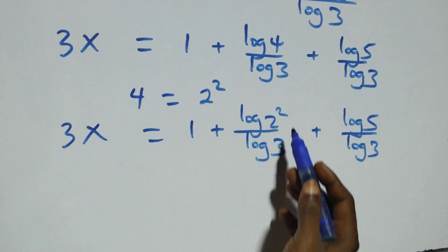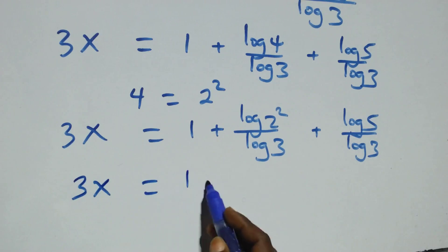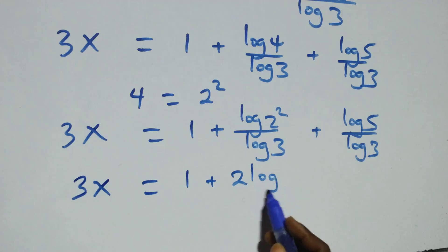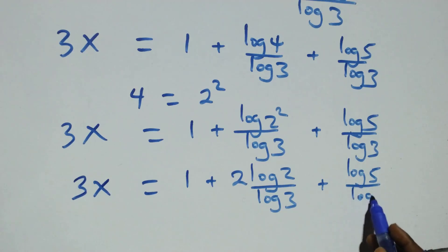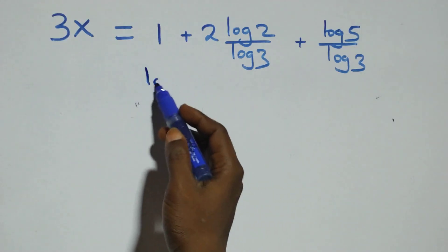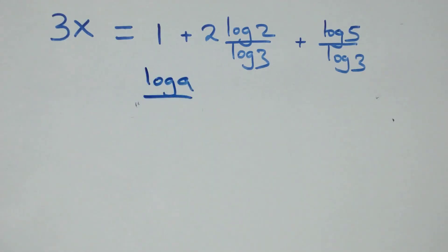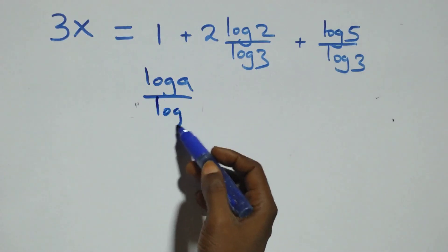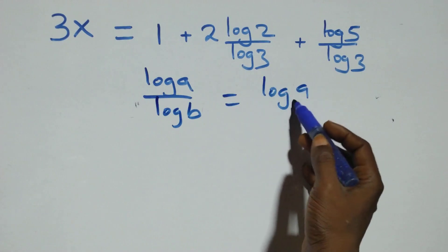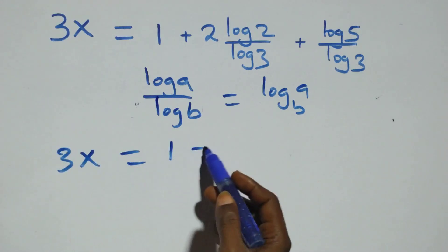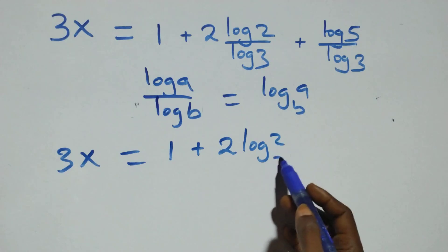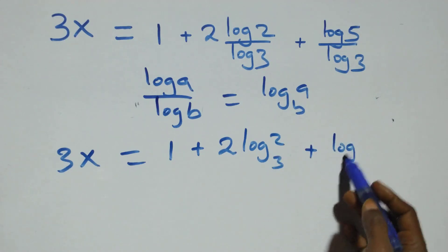Here we apply the power rule of logarithm: the 2 comes down, giving 3x equals to 1 plus 2·log 2 over log 3 plus log 5 over log 3. Then we apply the change of base formula, where log a over log b is the same thing as log a to base b. So what we have here becomes 3x equals to 1 plus 2·log₃2 plus log₃5.